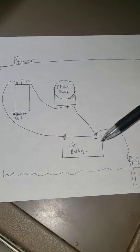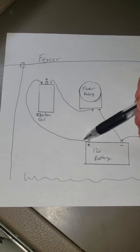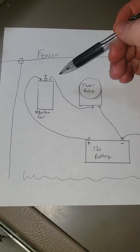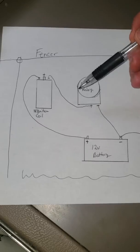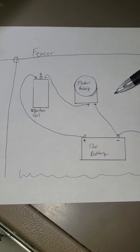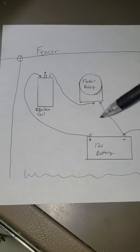First you have your 12-volt battery. Your power runs to the power side of the ignition coil. Your negative runs to the positive side of the flasher relay, and then your negative on the flasher relay runs back to the negative on the battery, and the battery is grounded.